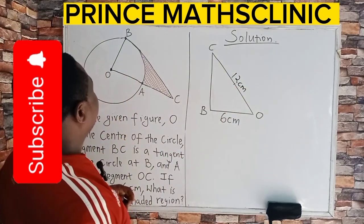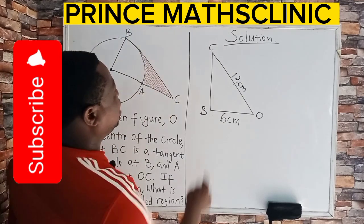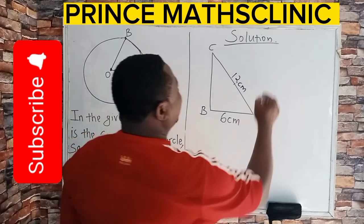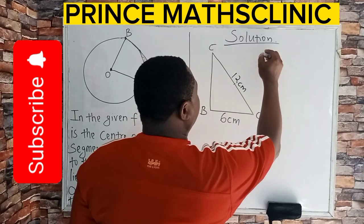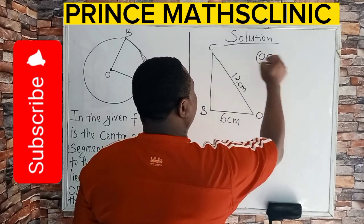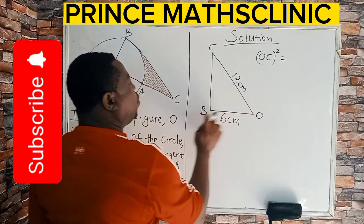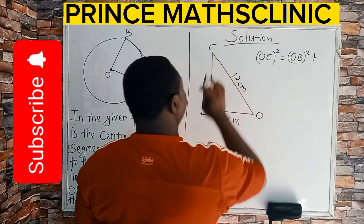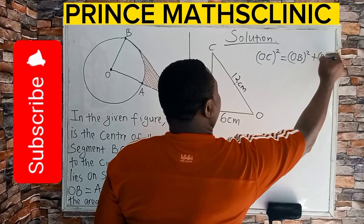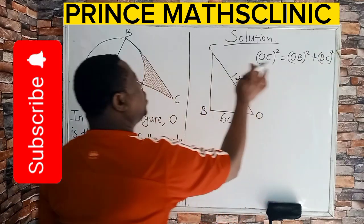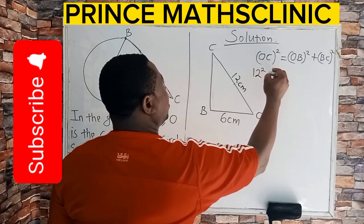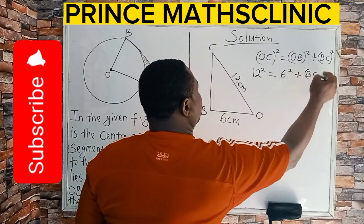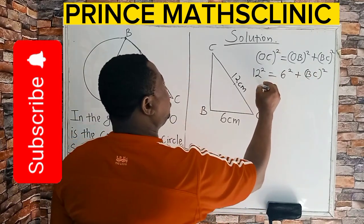So CB can be determined. CB is this leg here. So we know from Pythagorean theorem that OC squared is equal to OB squared plus BC squared. OB squared is 6 squared, and BC squared is unknown. So to get BC squared, it's going to be 12 squared is 144.